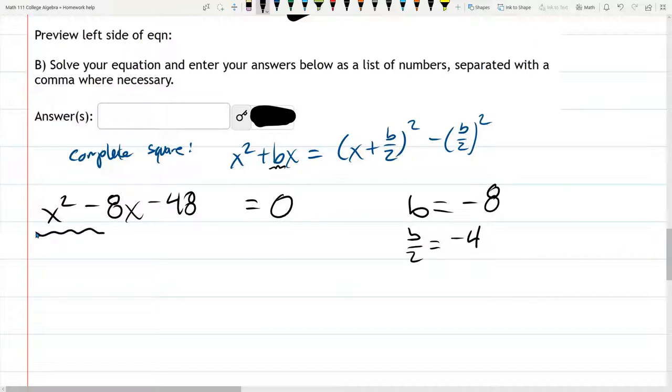What I am operating on is only the terms with x in it. That minus 48 is just going to hang out. So what I have is x squared plus bx. So this is x plus b over 2 squared minus b over 2 squared. And we're copying down the minus 48. Still equals 0.